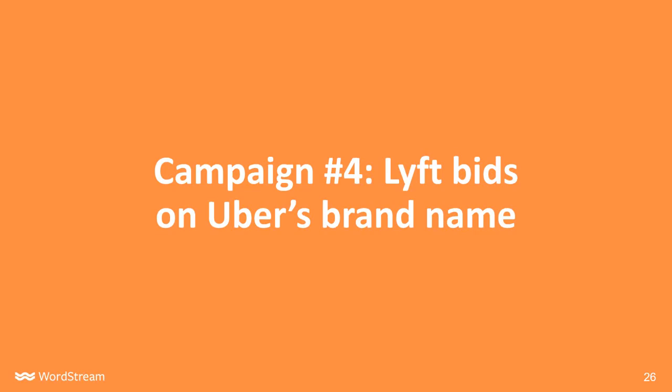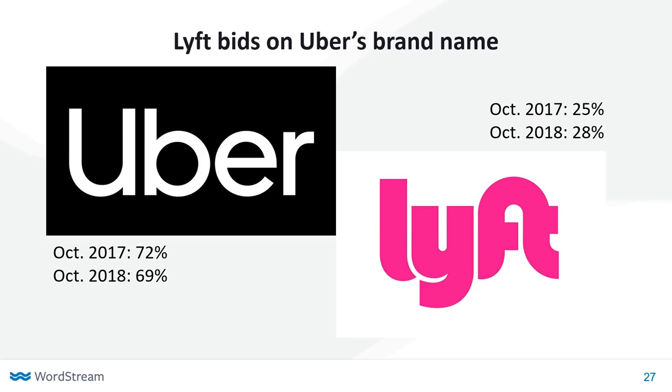We're going to do one more example of good Google Ads advertising, and for this one we're shifting to a totally different market — the ride-sharing market in the U.S. As you probably know, there are two major brand names in that market: Lyft and Uber. Back in October 2017, Uber commanded about 72% market share of the U.S. ride-share market, while Lyft was right around 25%. Fast forward to October 2018, Uber's market share is down to 69%, and Lyft's market share is up to 28%. As of right now, Lyft's revenue is growing about twice as fast as Uber's.